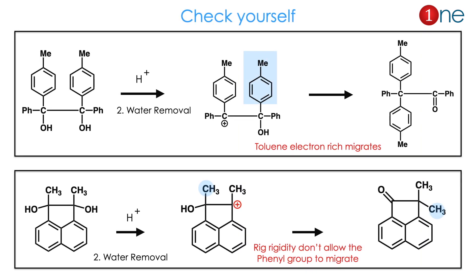In the first example, the electron-rich group is more substituted than phenyl, so it migrates. In the second example, it is a rigid system — in a rigid system, the free group migrates instead of phenyl, so methyl migrates and you get the final product.